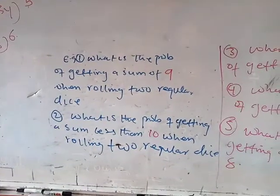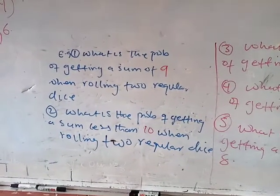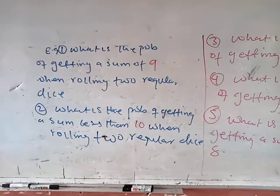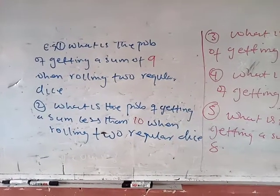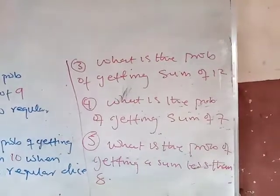The first question is what is the probability of getting a sum of nine when rolling two regular dice? What is the probability of getting a sum less than ten when rolling two regular dice? What is the probability of getting a sum of twelve?